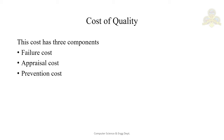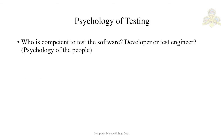So the cost of quality has three components: failure cost, appraisal cost, and prevention cost. Next we will study the psychology of testing. Before jumping in, let's try to answer the fundamental question: who should test the software — is it the developer or is it the test engineer?